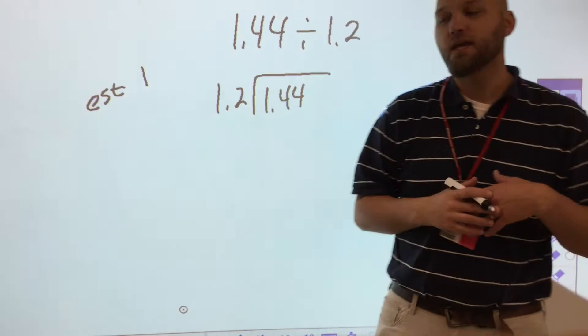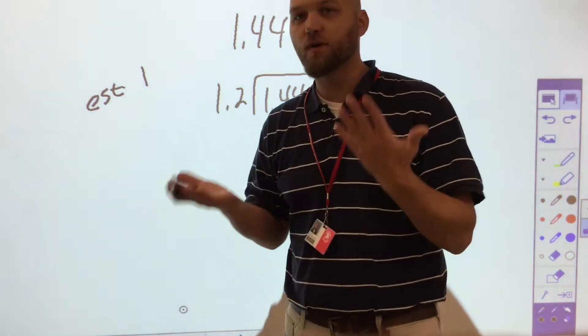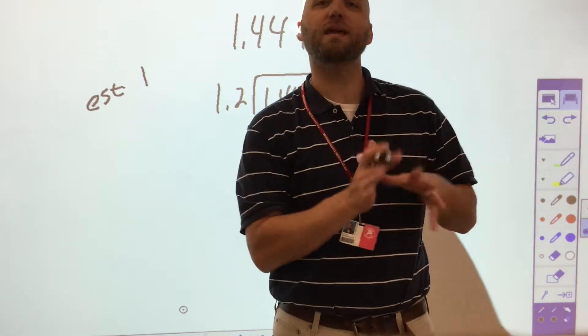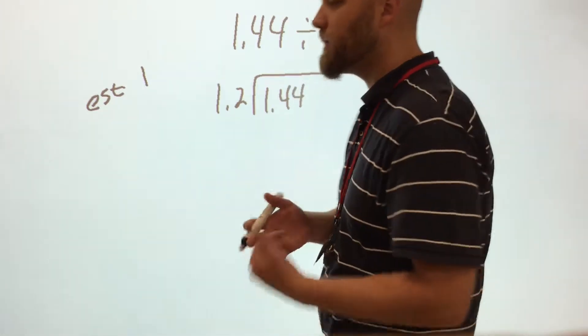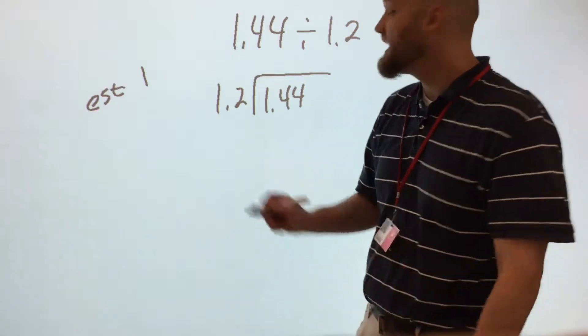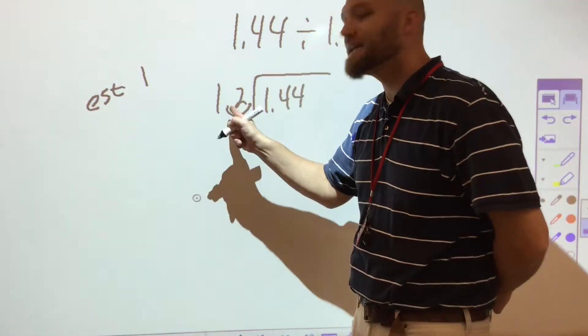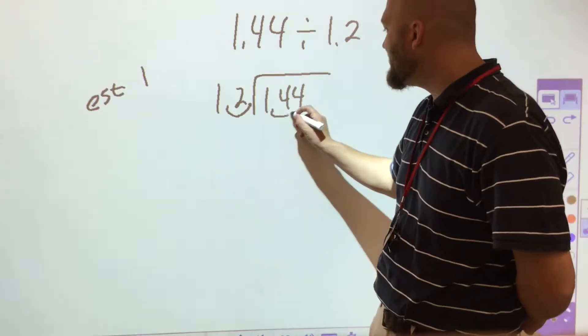Now it's important to realize that whether I'm working with a dividend or a divisor, when I change one number in relation to my decimal, I can do the same to the other number. So whenever I change one, I have to change the other. In this case, I can just move the decimal over one place. Because I did that here, I need to do that here.